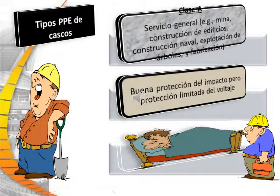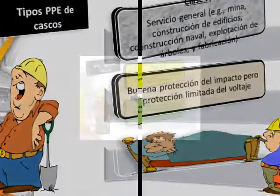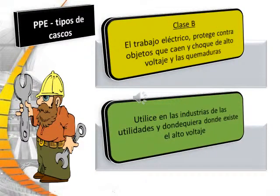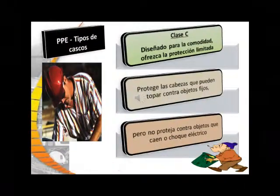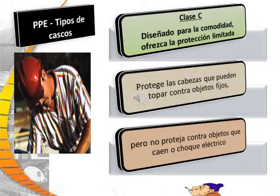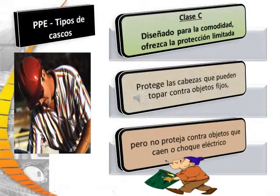Types of hard hats: Class A — general service, used in mining, building construction, shipbuilding, lumbering, and manufacturing. Provides good impact protection but limited voltage protection. Class B — electrical work; protects from falling objects and high voltage shock and burns. Class C — designed for comfort, offering limited protection. Class C protects your head against bumping against fixed objects but does not protect against falling objects or electrical shock.